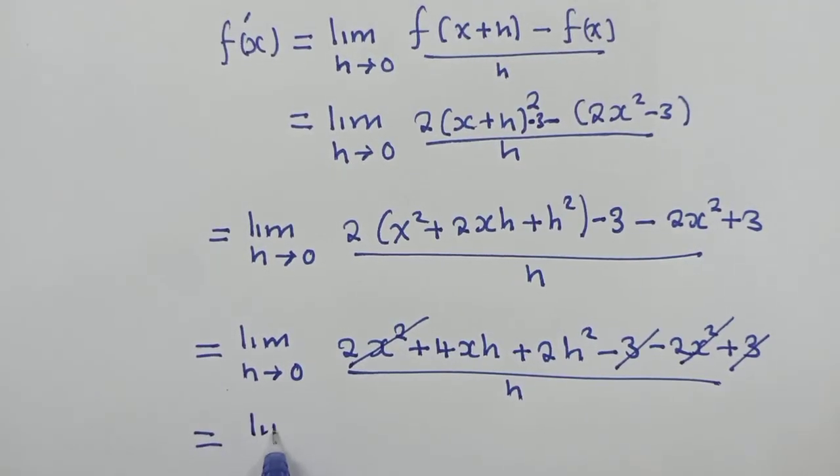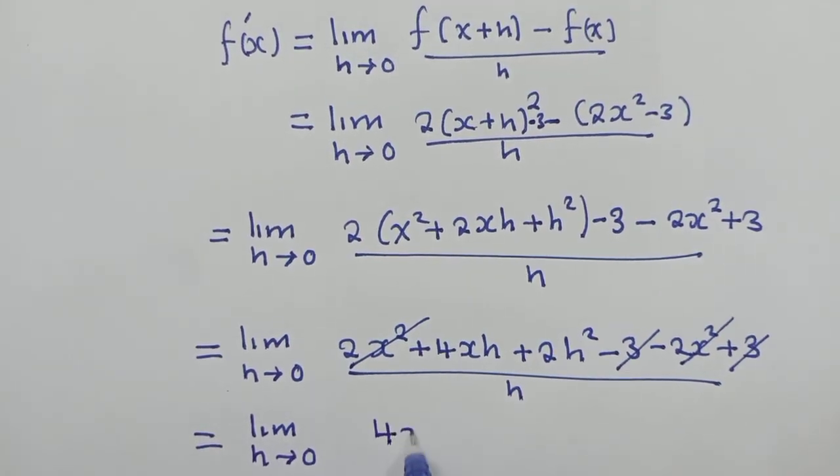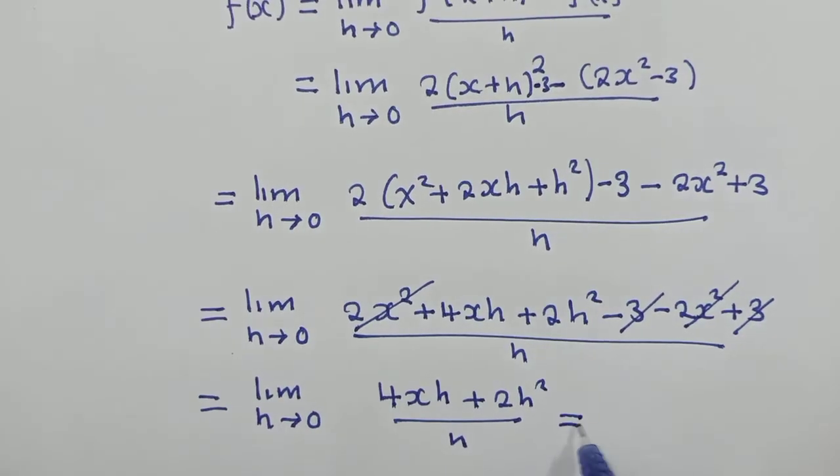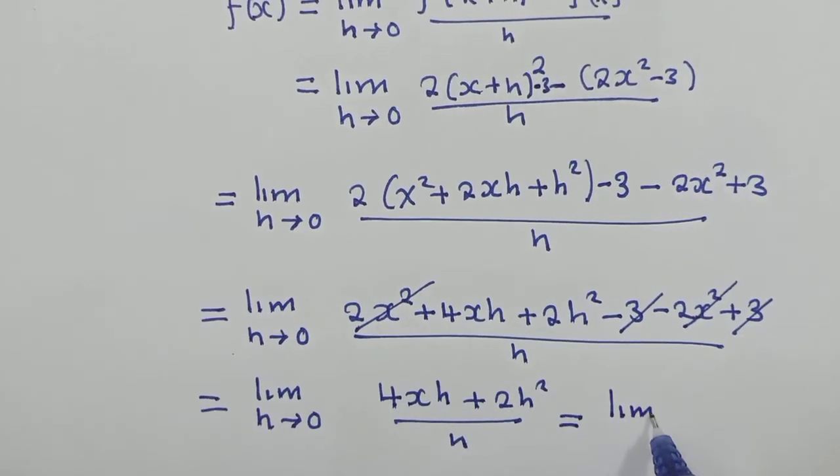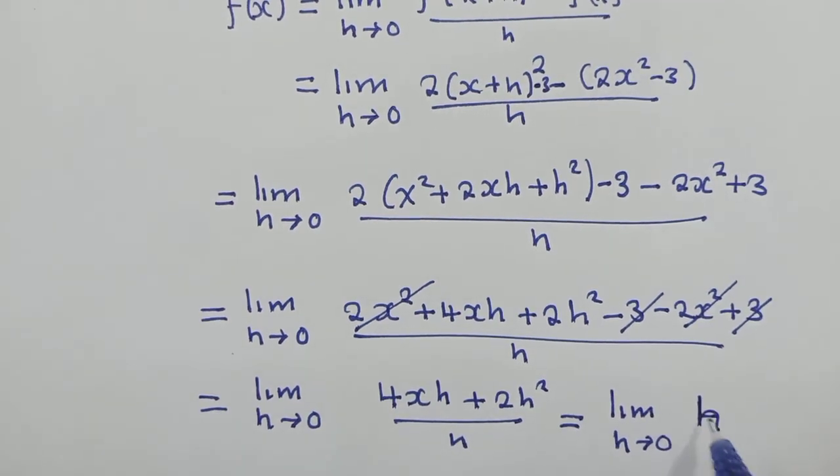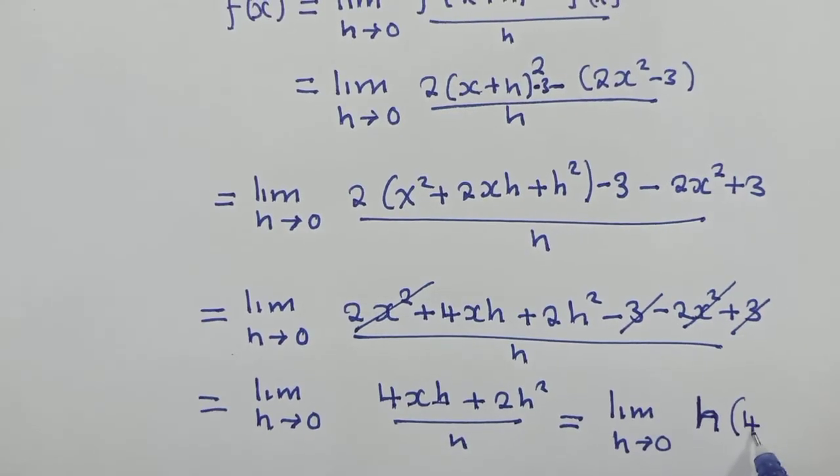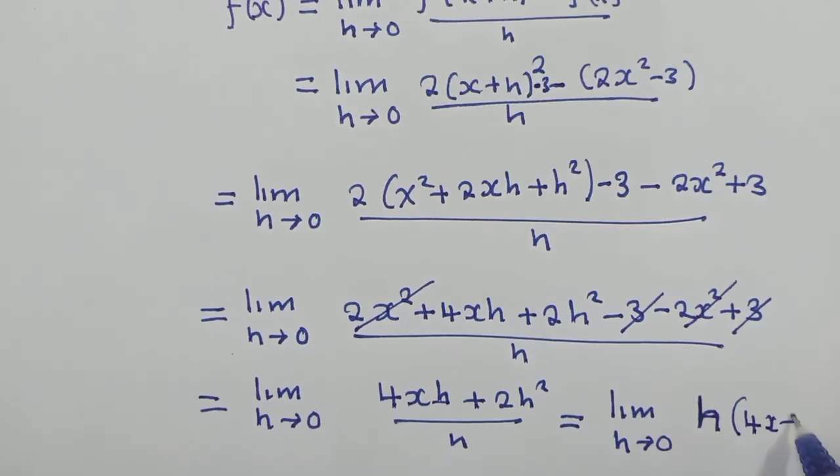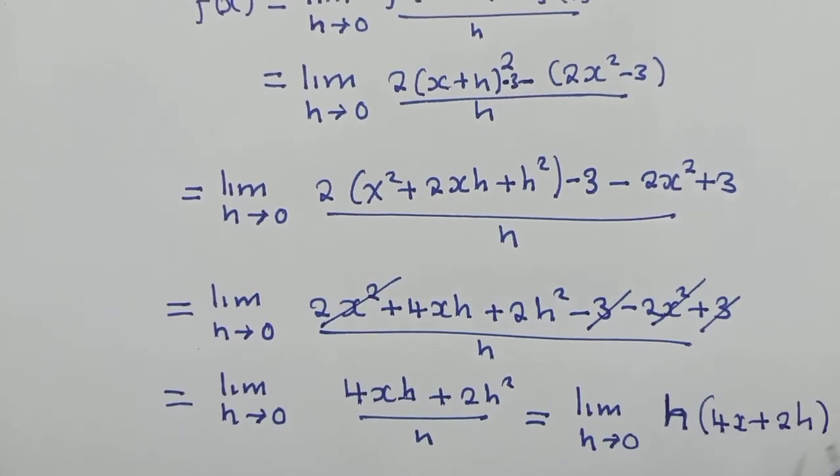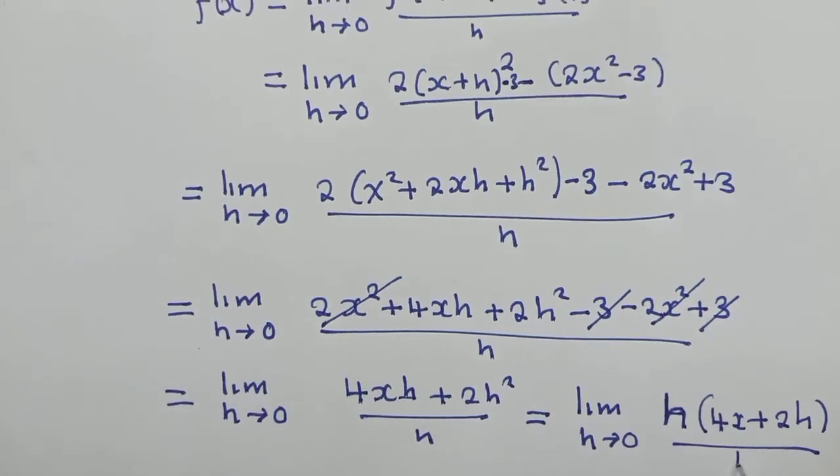Okay, so we should say limit as h approaches 0. We have 4xh plus 2h squared over h. So here, we have limit as h approaches 0. Here, we shall have h outside. We shall factorize h. And we'll remain with the 4x plus 2h. Okay, we even close over h.